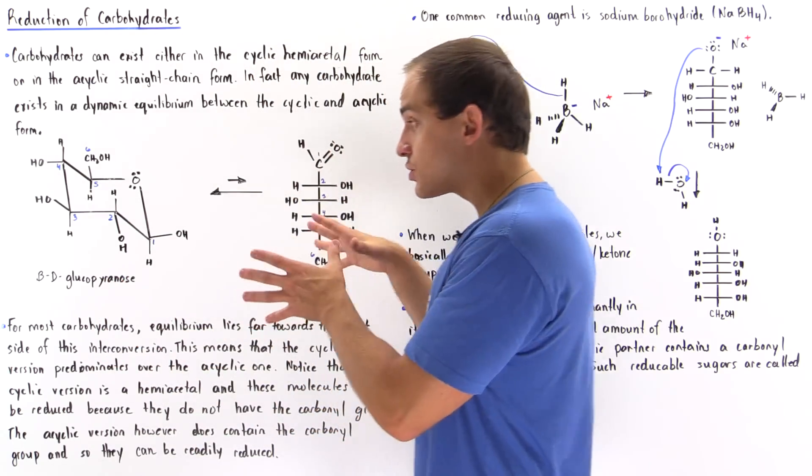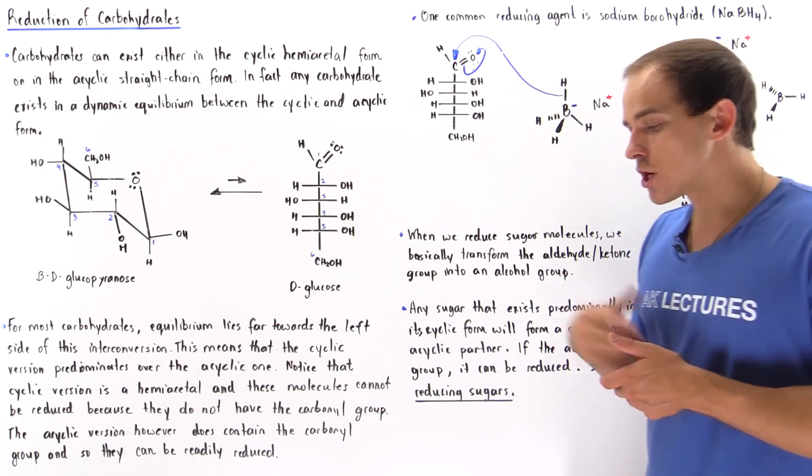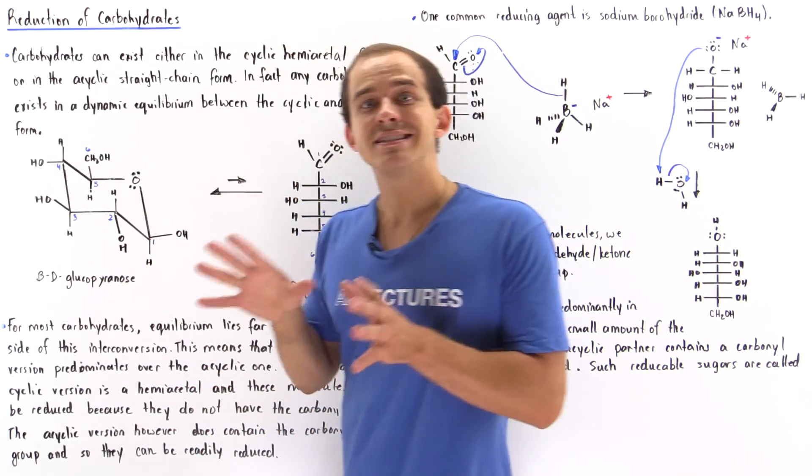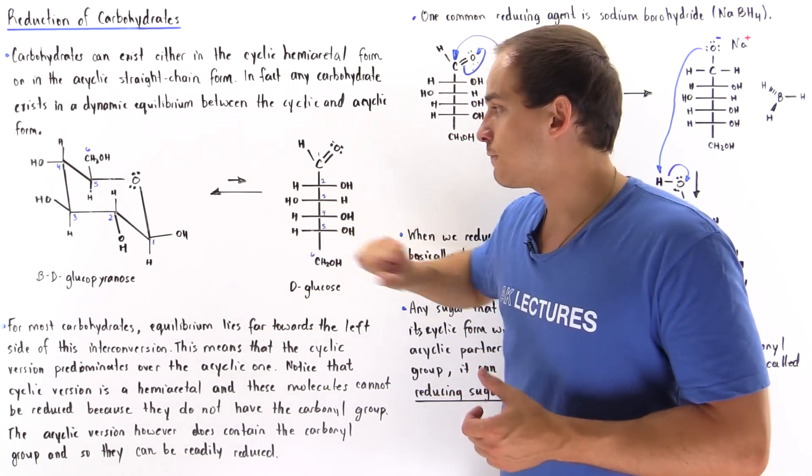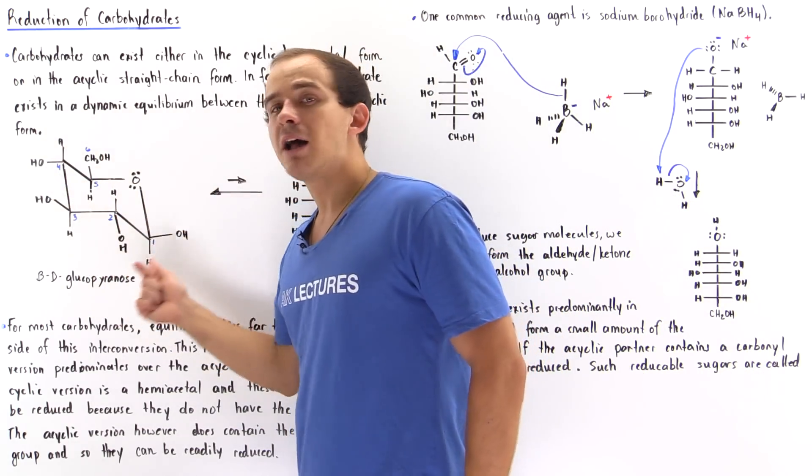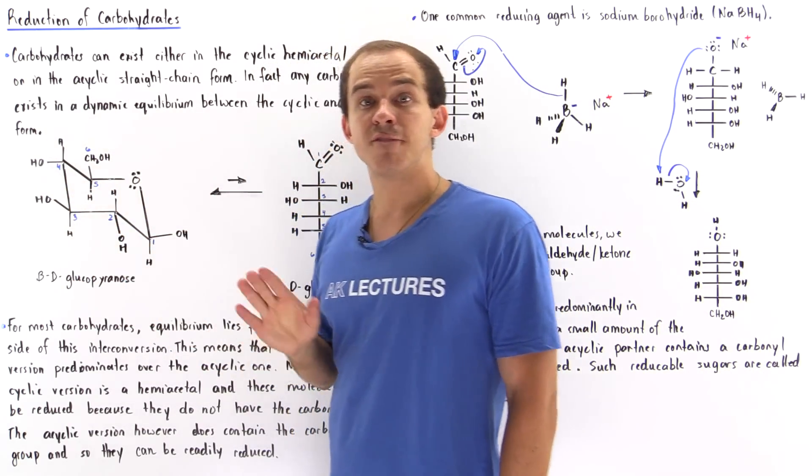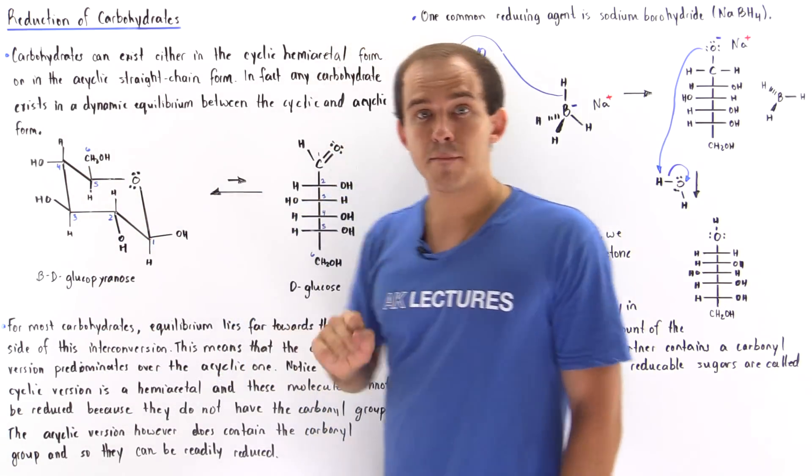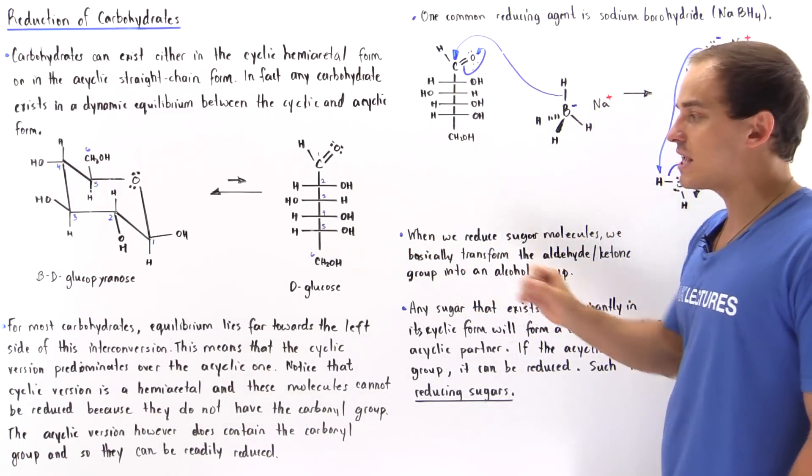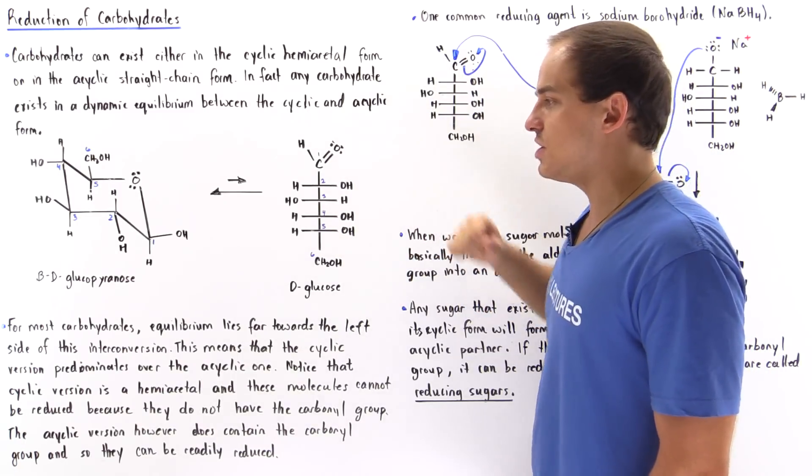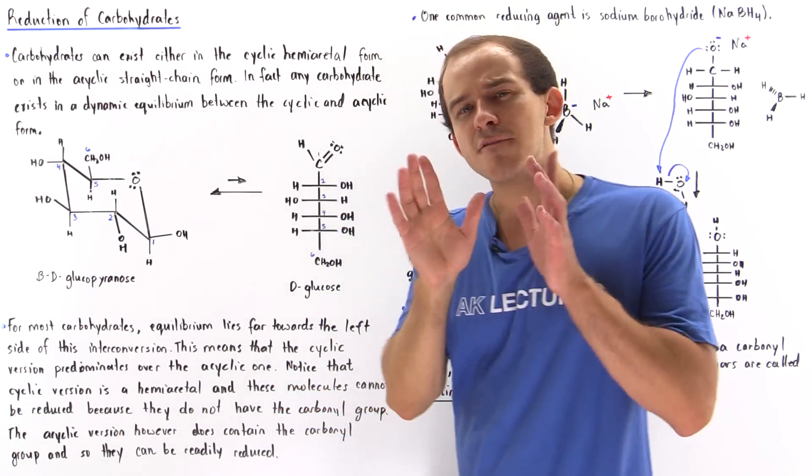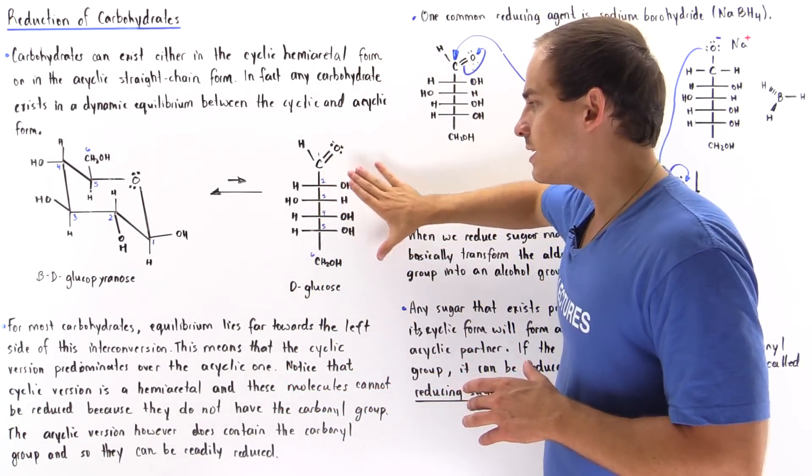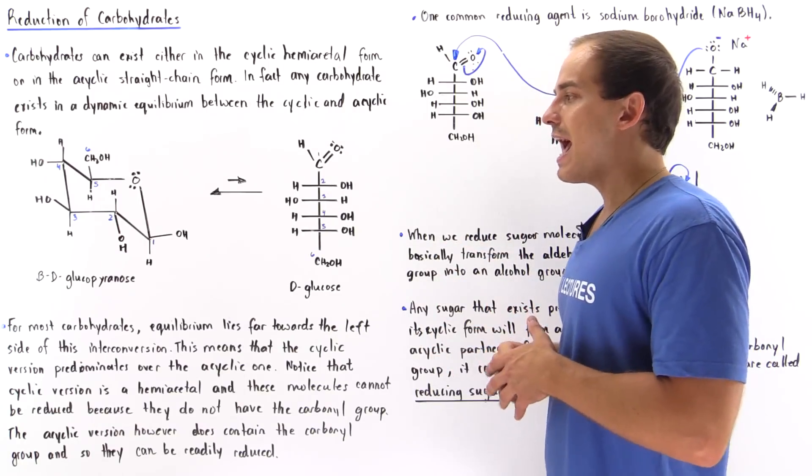For this glucose case, as well as many other carbohydrate molecules, this cyclic is the one that predominates. Specifically for this case, we have about 99.95% of this cyclic molecule at equilibrium and only about 0.05% of the acyclic D-glucose. So we only have a very tiny amount of this molecule, the acyclic version, actually present at equilibrium.